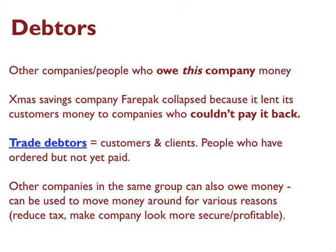In other words, Fairpack had debtors — it had people that owed it money — and those debtors were not able to pay that money back. One of the things you'll find on a balance sheet and in the notes to the accounts will be information about how much this company is owed by other companies or people, and perhaps when they might expect it back. You might see information about trade debtors — people who have ordered things, like customers or clients, but haven't yet paid. They might also be owed money by other companies in the same group — one of the ways that money is used to move money around a company group, possibly to reduce tax or to make some parts of that company structure look more profitable or secure than they actually are.